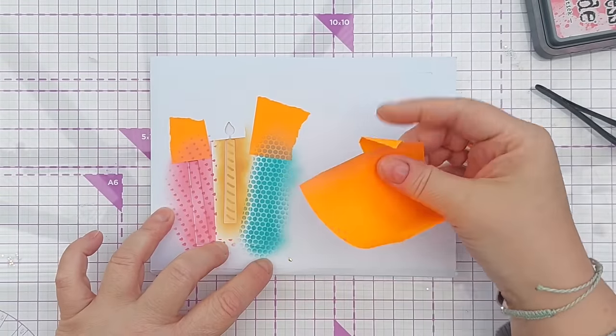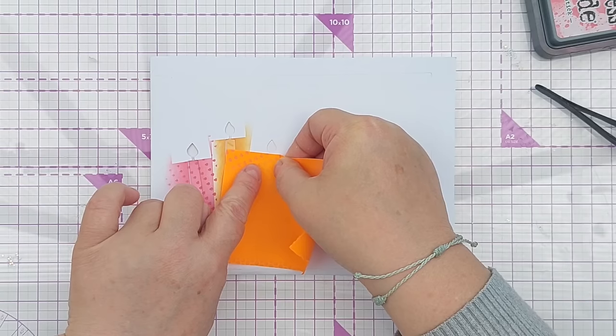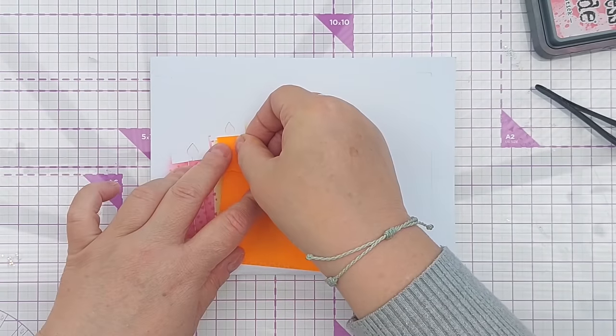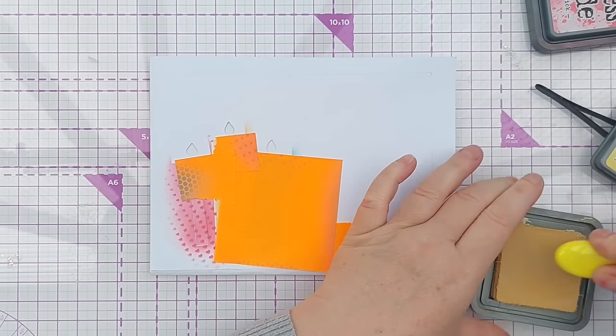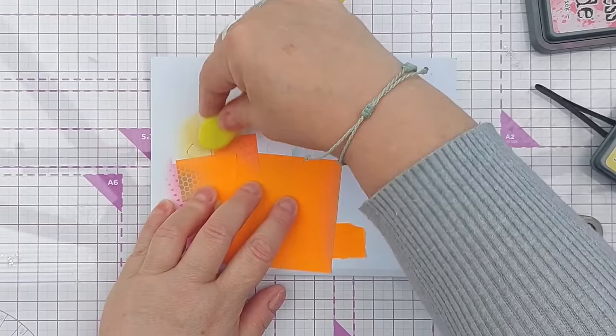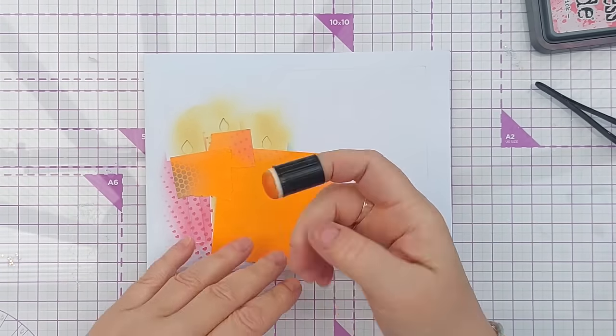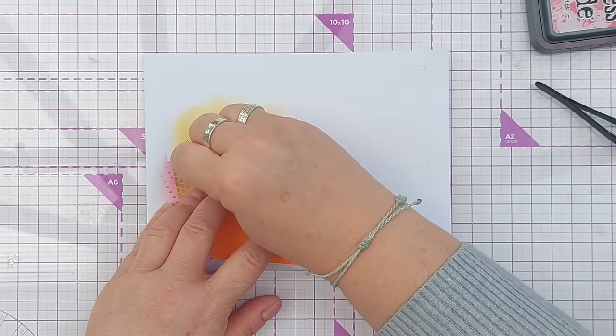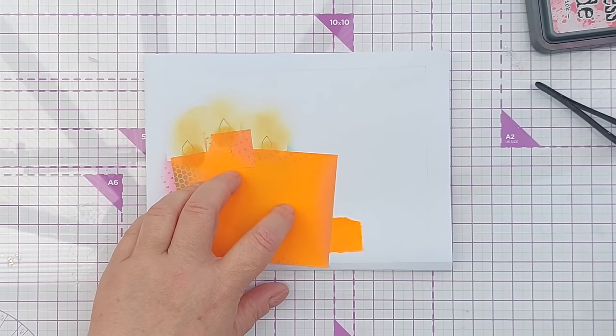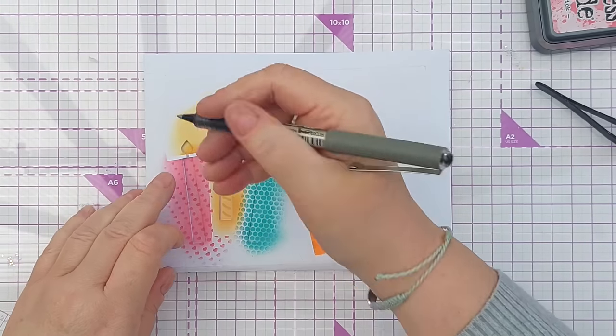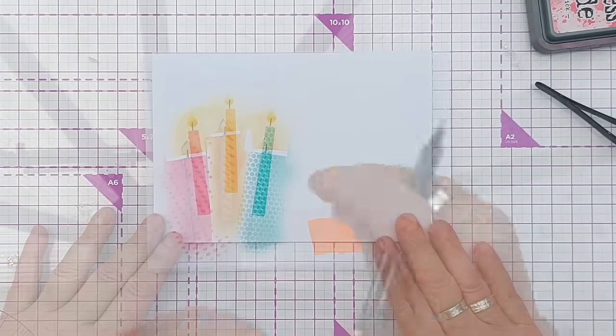So that's the body of the candles done. Now for the flames, I'm going to take my sticky note masks and mask off up here right up to the bottom of the flame, so all that's exposed is the flame area. For this I'm going to use scattered straw to color the whole of the flame, and then I've got a finger dauber with spiced marmalade. I'm just going to add a little bit to the bottom of each flame.